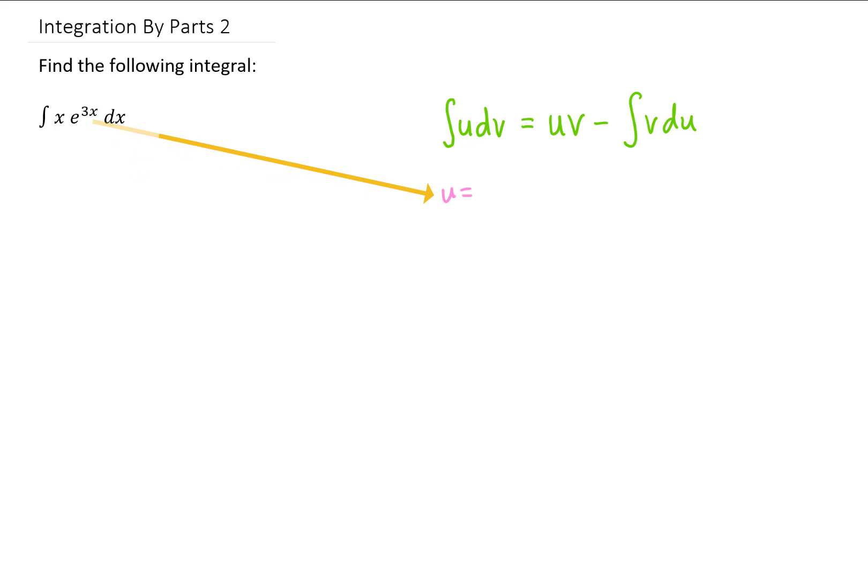In other words, if we decided to choose u equals e to the 3x, that would give us du is 3e to the 3x, and that is not any simpler than what we started with. So in the majority of cases, that is going to be the wrong choice.